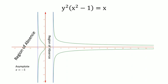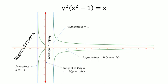The region of absence is marked. The asymptote x = -1 and the asymptote x = 1 are drawn, along with the asymptote y = 0, that is the x-axis. The tangent at the origin is the y-axis. This is the traced curve of this equation. Thank you.